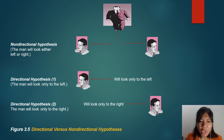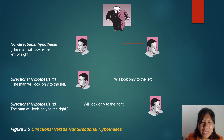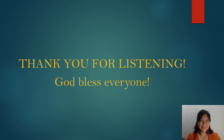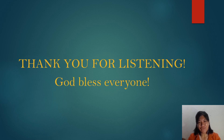In figure 3.5, we give emphasis to the difference between directional and non-directional hypotheses. For the non-directional hypothesis example: the man will look either left or right. For the directional hypothesis examples: the man will look only to the left, or the man will look only to the right. That would be all for my report — thank you for listening, classmates, and thank you, Dr. Greg. God bless everyone.